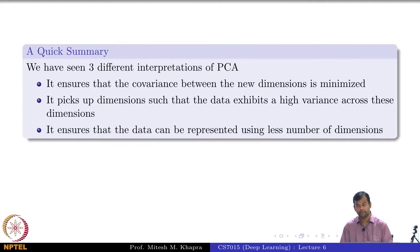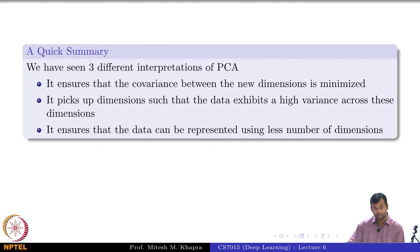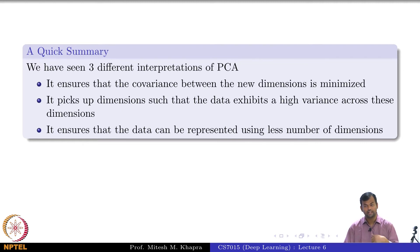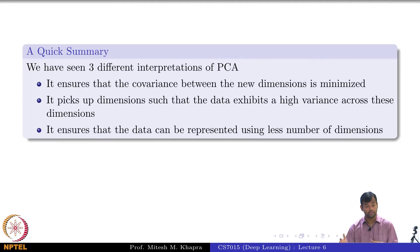A quick summary: we have seen three different interpretations of PCA, and eigenvectors played a crucial role in that. The other thing which played a crucial role was the covariance matrix of the original data. With these three different interpretations, we realize that the transformed data we get by projecting the original data onto a basis consisting of eigenvectors ensures that there is high variance across the new dimensions, and we can ignore the bottom n minus k dimensions along which the variance is not high.